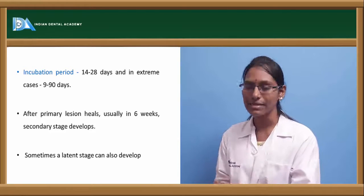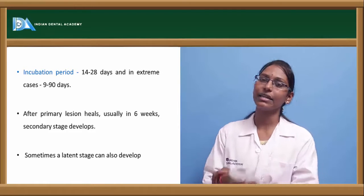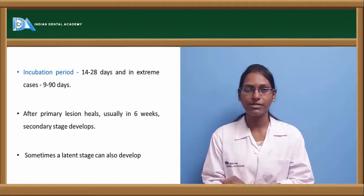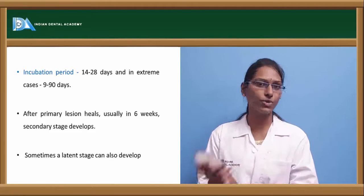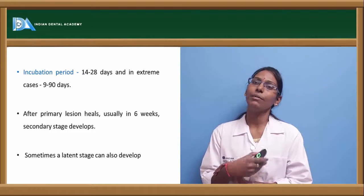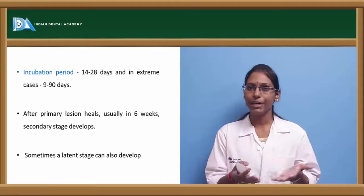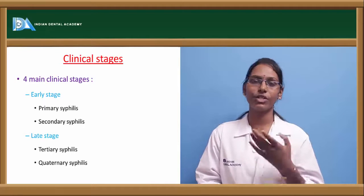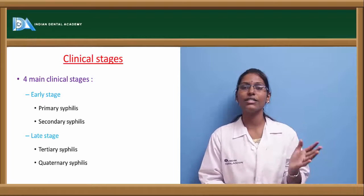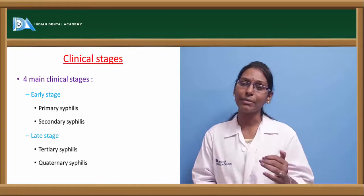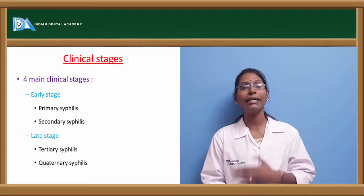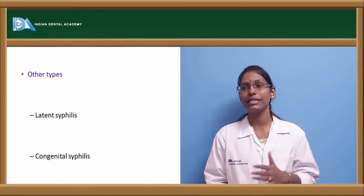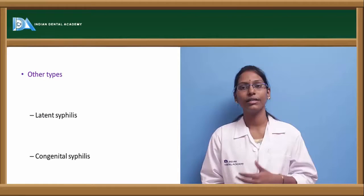After the primary lesion, which usually heals in 6 weeks, a secondary stage of syphilis develops. Sometimes the patient can enter a latent phase where they are asymptomatic, and after this period of latency, other manifestations can occur. The clinical stages are of 4 types: early stages include primary and secondary syphilis, while late stages include tertiary and quaternary syphilis. Other stages include latent syphilis and congenital syphilis.